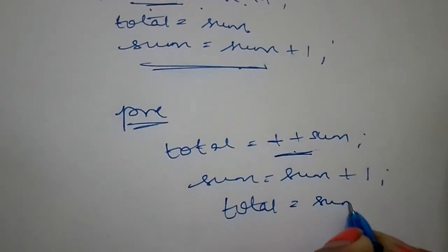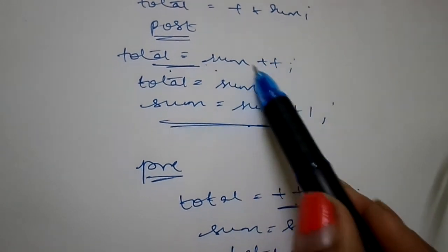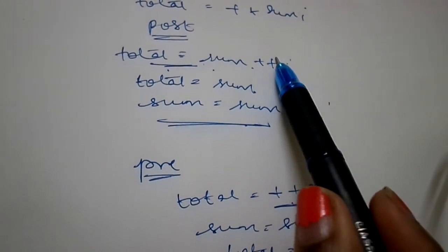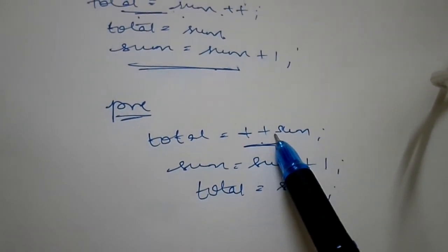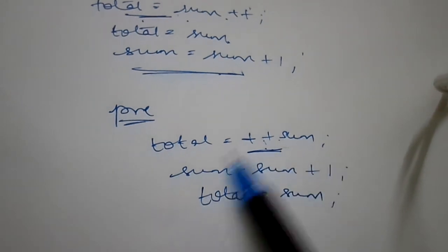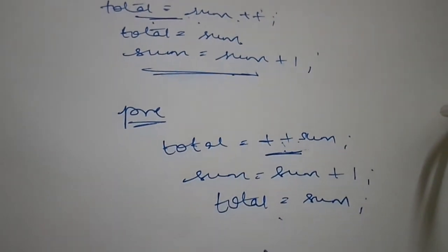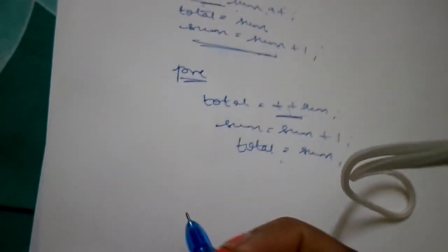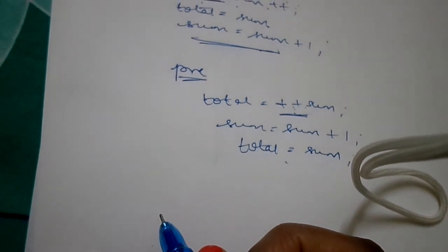And then it's asking me to assign: total = sum. So here what we do is we first assign and then we add. In pre, what we do is we first add, that is before, and then we assign. So this is the difference between pre and post increment.